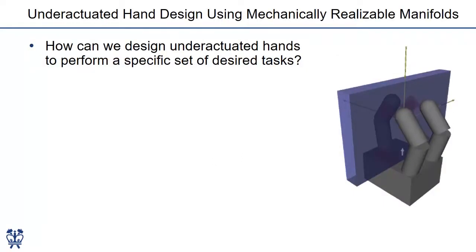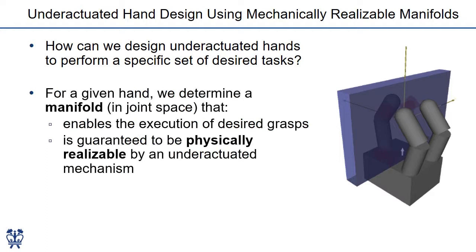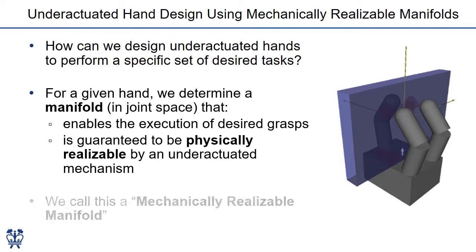First of all, let's come to the big question we wish to answer: how can we design underactuated hands to perform a set of desired tasks? In our work, we propose a method to determine a manifold in joint space that allows the execution of a certain set of grasps, and we can also guarantee that this manifold can be physically realized by an underactuated mechanism. We call it a mechanically realizable manifold.